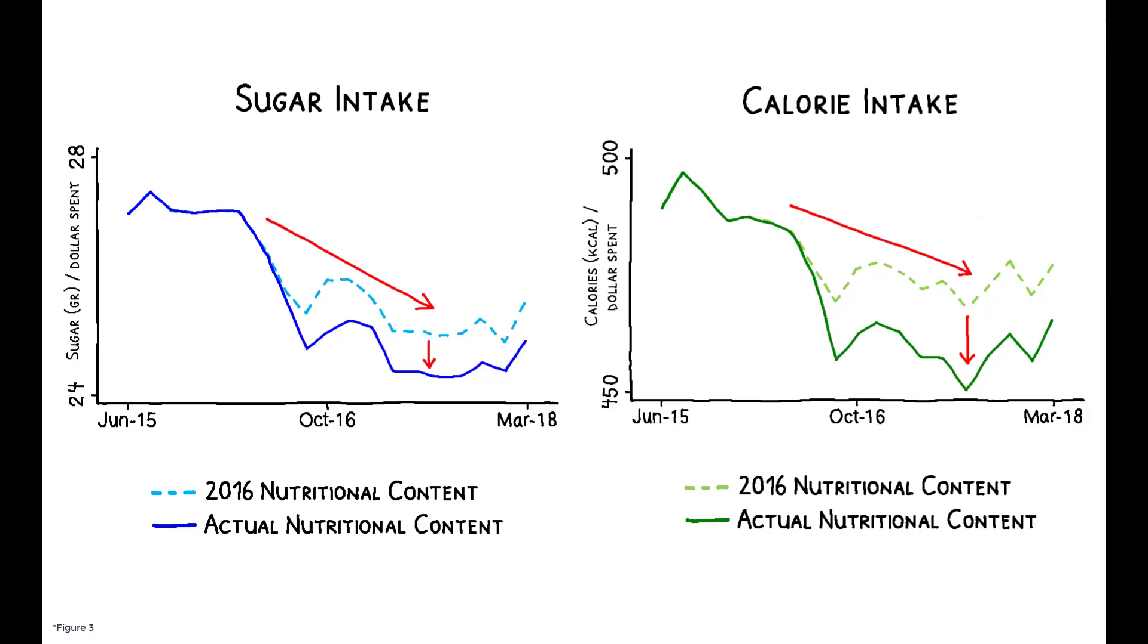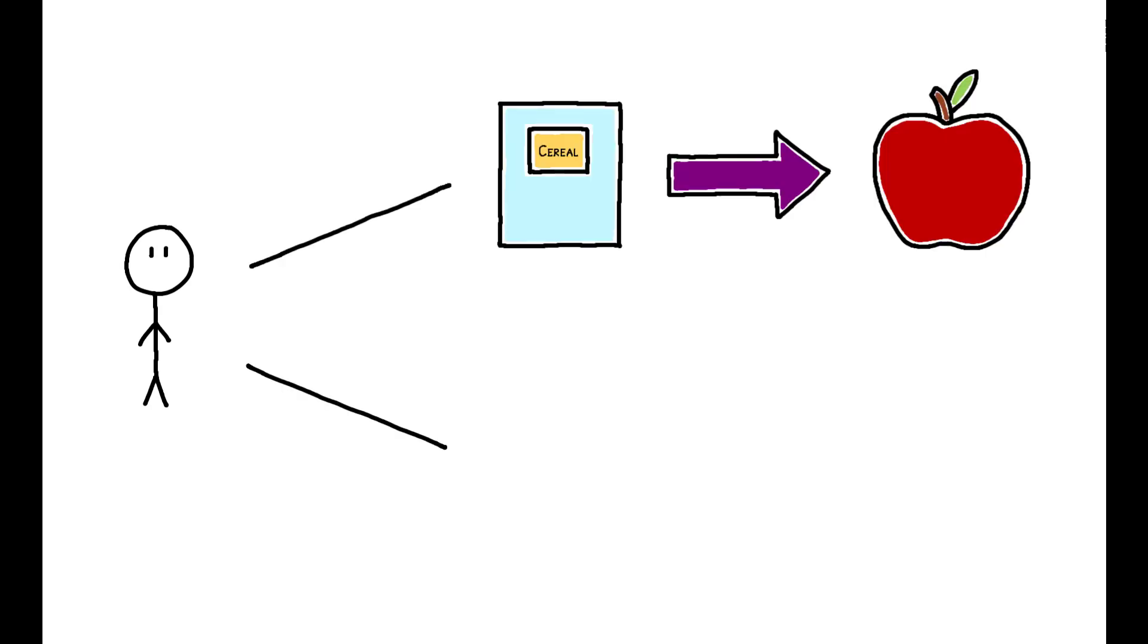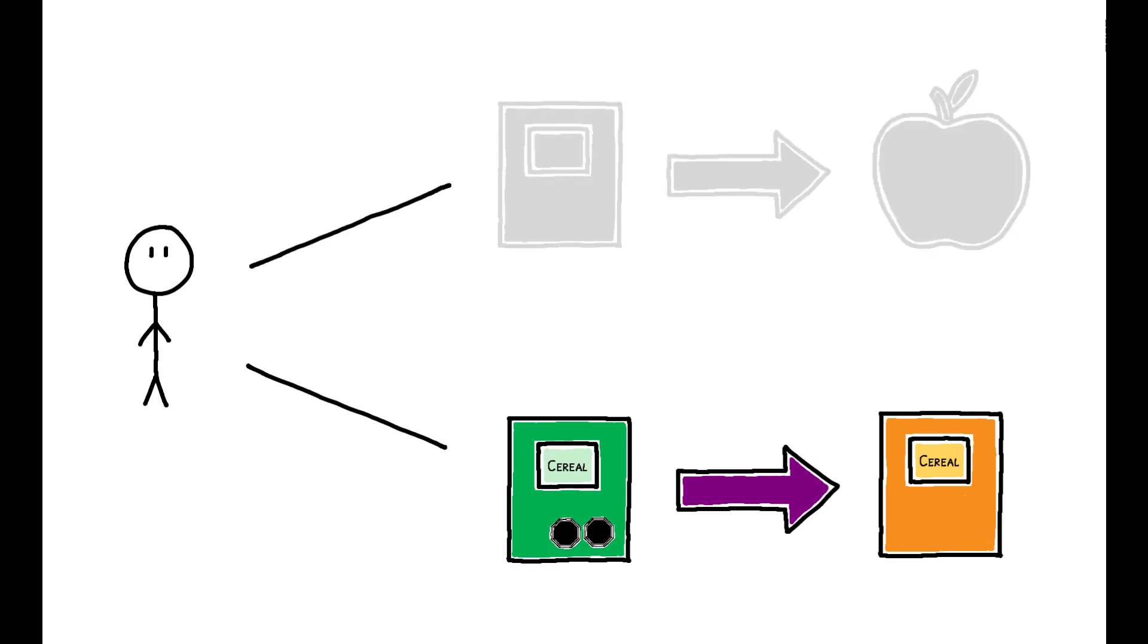The authors disentangle the demand and supply responses driving these effects by focusing on the market for breakfast cereal. First, consider the demand side. The fact that consumers shifted to a healthier bundle of products suggests they either switched from unhealthy to healthy product categories, or substituted from unhealthy to healthy products within categories. There is little evidence for the former, but within category, we do see a substantial and persistent shift from labeled to unlabeled products.